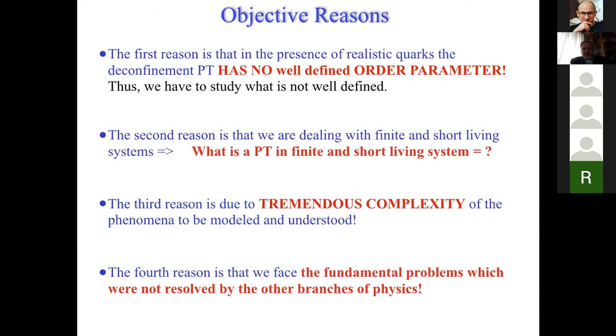Don't you think that after so long time, first we did not find much in the experiments to reach our original goals one and two? And second, why do we not care about such a bad situation in our field? Let's discuss some objective reasons. I would like to spare some time and not go into details of these three. We know that the confinement phase transition has no well-defined order parameter in presence of quarks with realistic masses. Second, we really don't know on the theoretical side what is the phase transition in a finite and short-lived system. And as pointed out several times at this conference, it is tremendously complex to model and understand the phenomena which occur in heavy ion collisions.